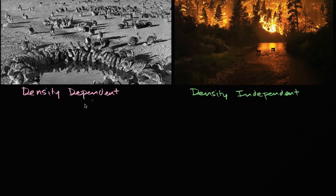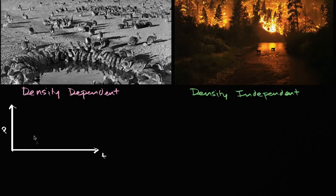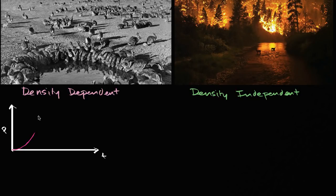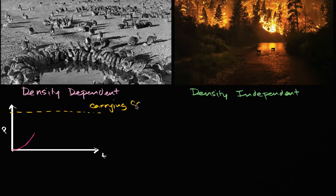Let's think about density dependent regulation. Let me draw a little chart — the vertical axis is population (P) and the horizontal axis is time (T). In previous videos we talked about how a rabbit population could grow exponentially, growing a certain percent every month. But we can't expect that to happen forever. The environment only has a certain carrying capacity, and we'll think about what's determining that carrying capacity.